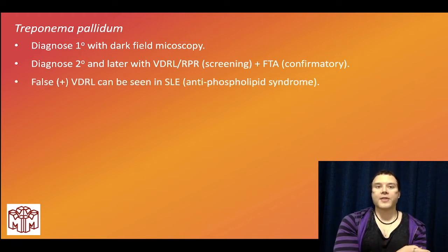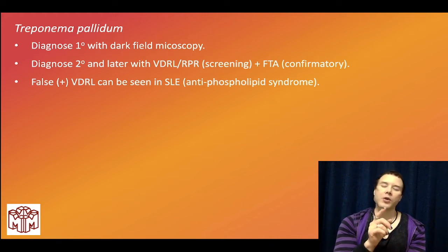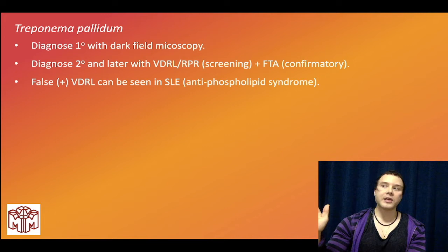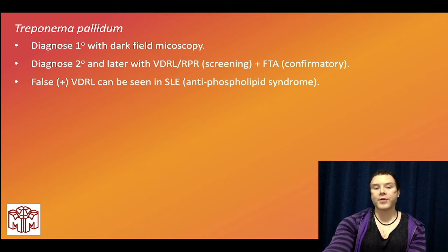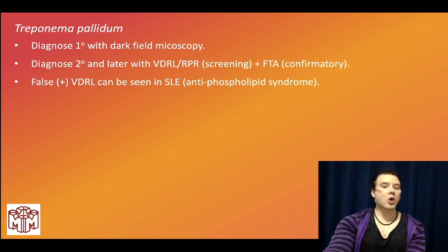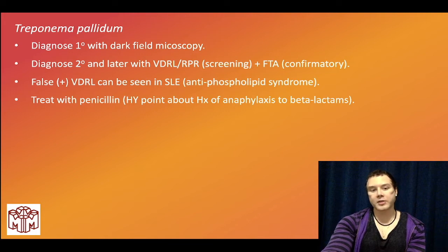They might give you a patient with SLE and tell you the VDRL is positive. Know that lupus anticoagulant is an antibody against phospholipid — you can get a high aPTT in our coagulation cascade, but in vivo thromboses occur. Patients with SLE can get a false positive VDRL. The VDRL is described as a test performed using charcoal particles — I've seen that on NBME exams. We treat syphilis with penicillin.